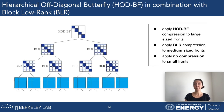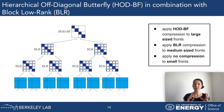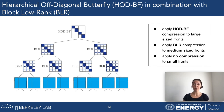We combine these methods: we use the HODBF format for really large frontal matrices in our assembly tree, the block-low-rank format for medium-sized blocks, and the really small frontal matrices remain as dense matrices and are not compressed at all.